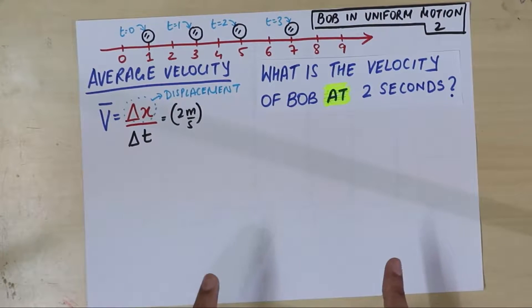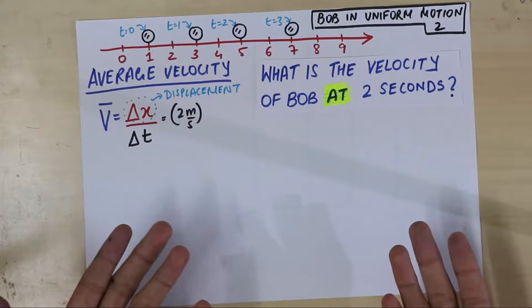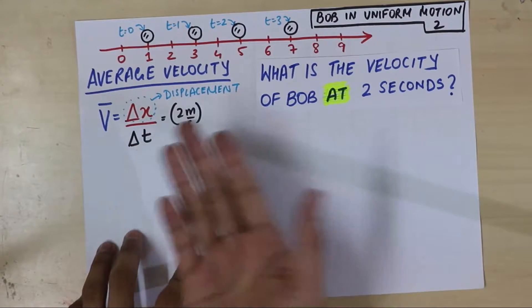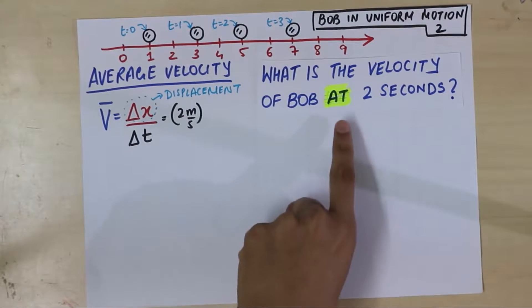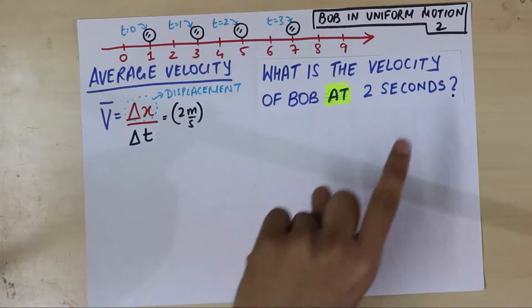What is the velocity of Bob at 2 seconds? Now you may say what is so radical about this, just asking me velocity and I have the formula for this right? Well, I have highlighted something over here, I am asking Bob's velocity at 2 seconds.